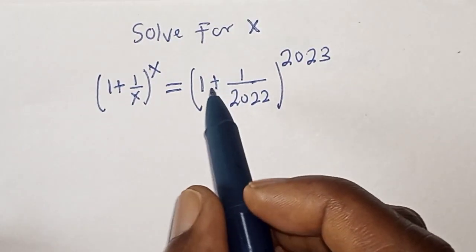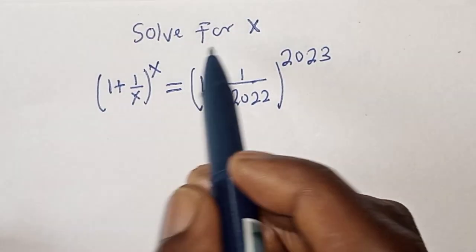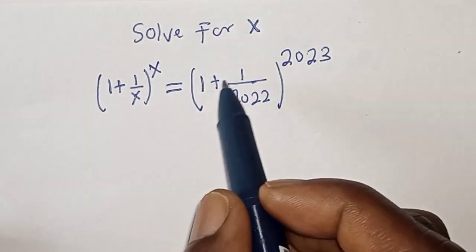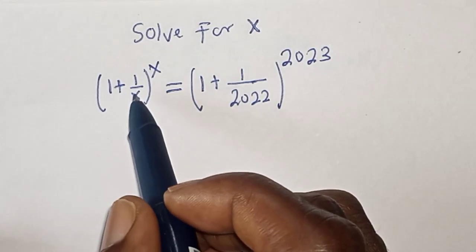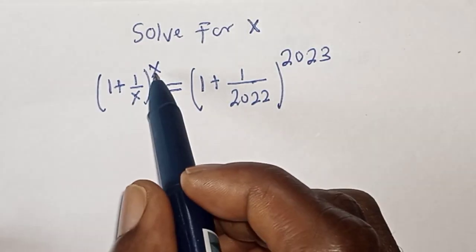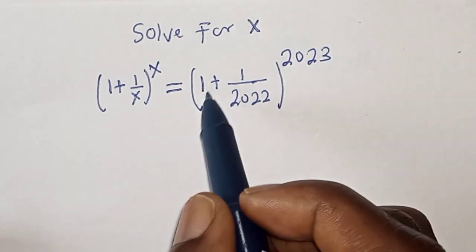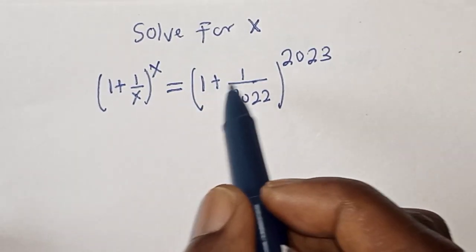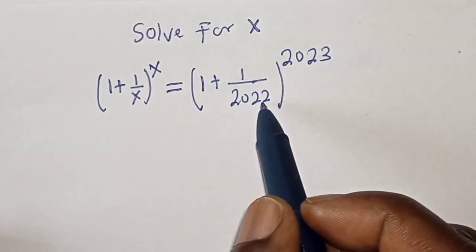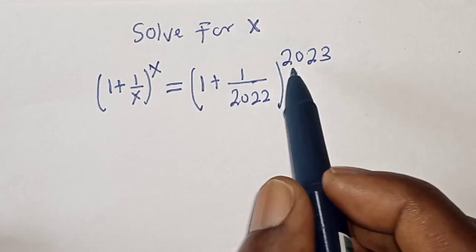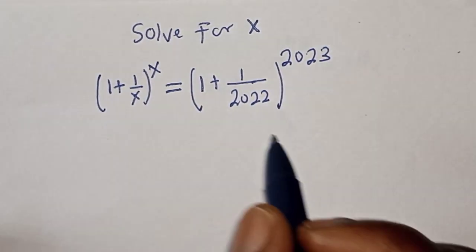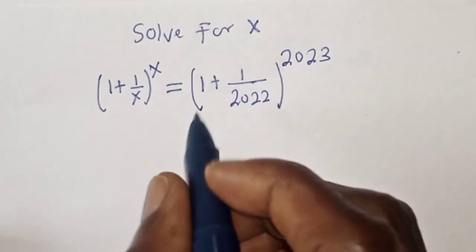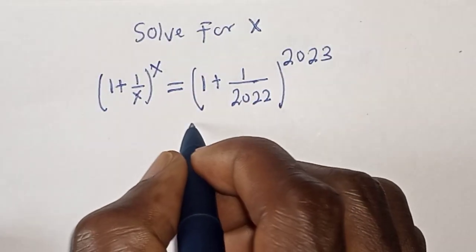Hello, welcome to Magic. In this class, we want to find the value of s from this given equation: (1 + 1/s)^s = (1 + 1/2022)^2023. Like, share, comment, and subscribe. Solution: